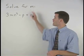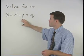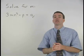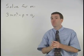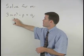To solve for m in the equation 3mn squared minus p equals q, our first step is to isolate the m term, which in this case is 3mn squared.